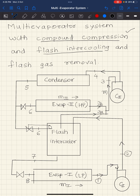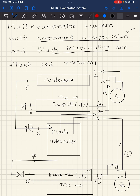In this schematic, flash gas removal is also done. The system has two evaporators — evaporator one and evaporator two. There are two compressors — compressor one and compressor two. There is a condenser, expansion devices one and two, and a float control valve.